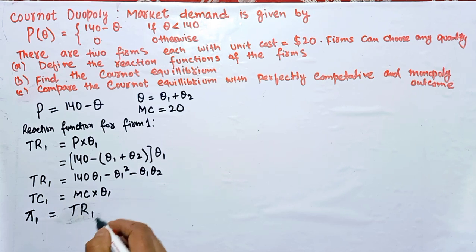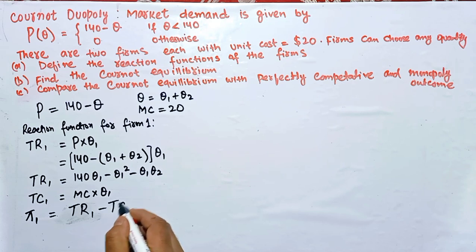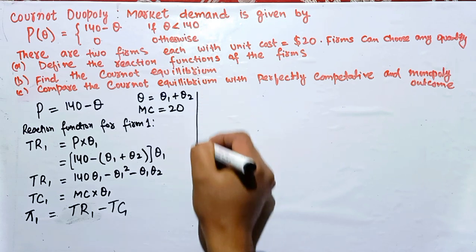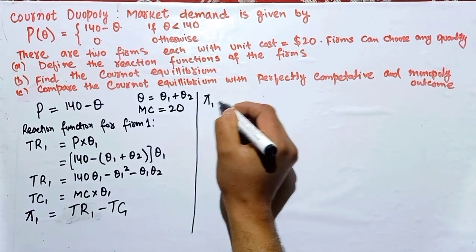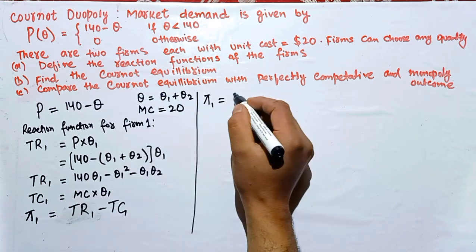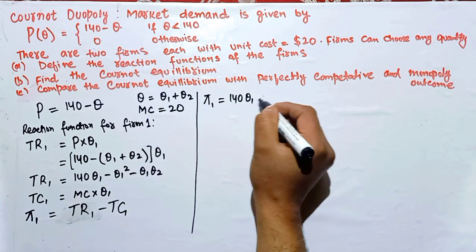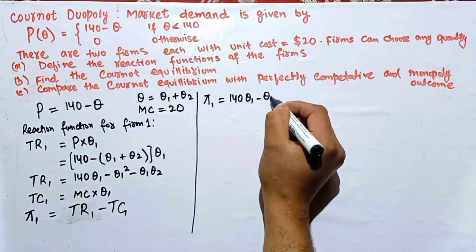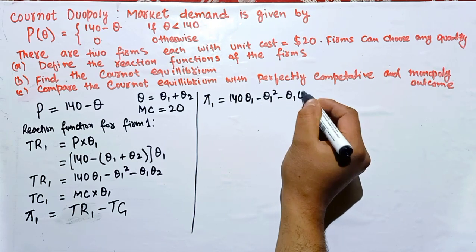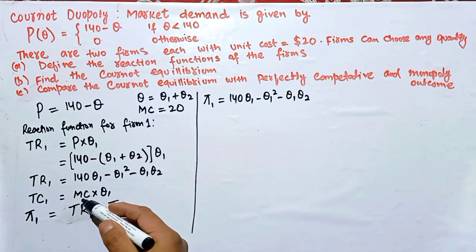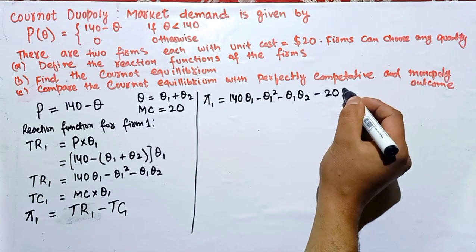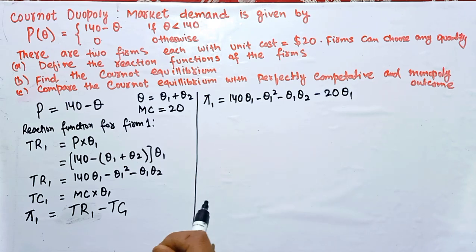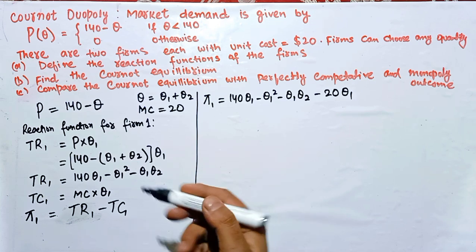Profit for Firm 1 equals total revenue minus total cost. Total revenue is 140·Q1 minus Q1² minus Q1·Q2, and total cost equals marginal cost times Q1, which is 20·Q1. So the profit function for Firm 1 is: π1 = 140·Q1 minus Q1² minus Q1·Q2 minus 20·Q1.